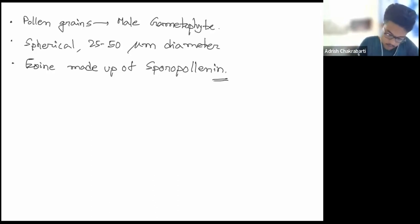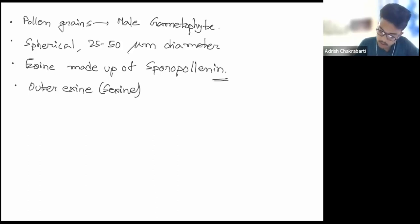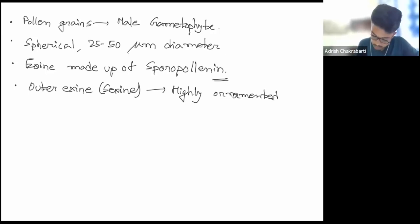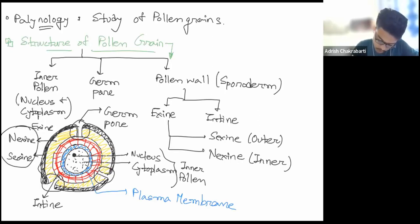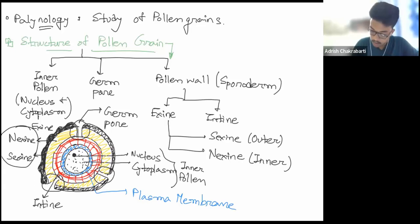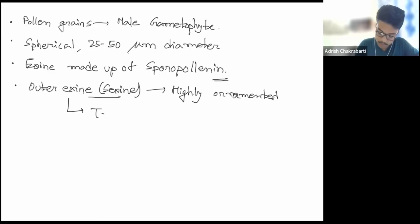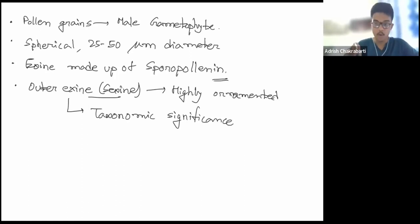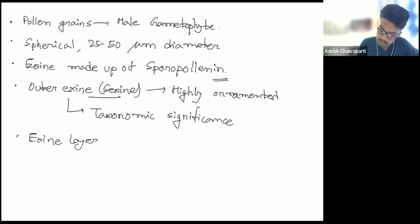The tapetal cells of the tapetum layer produce sporopollenin. Sporopollenin is the most resistant material yet to be found — no acid, no alkali, no enzyme, and no high temperature can degrade it. That's why even in fossil plants we observe pollen grains to be intact, because of this sporopollenin present in the exine layer. The outer exine layer, which is the sexine, is highly ornamented with different designs and patterns, making it of taxonomic significance.